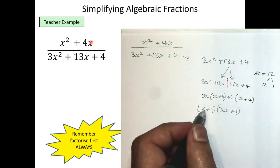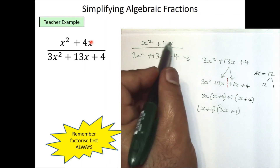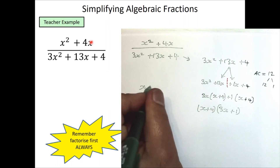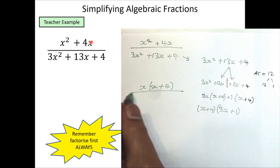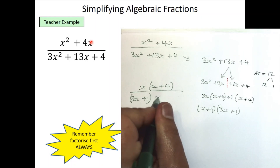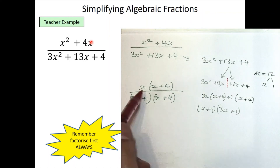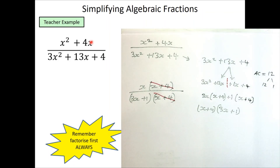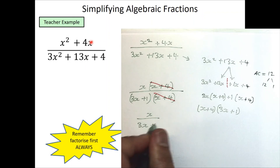Now putting this back into the full expression: the numerator x² + 4x has a common factor of x, giving x(x + 4). The denominator is (3x + 1)(x + 4). The common bracket (x + 4) appears on both numerator and denominator, so we cancel it, leaving x / (3x + 1) as the final answer.